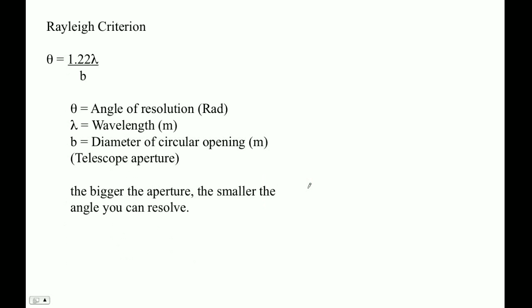And it's based on, well, here it is. It's based on the wavelength that you're using, the diameter of your circular opening. So if you've got a telescope that you're looking at something with, we're talking about this diameter here is b, if that's your telescope.